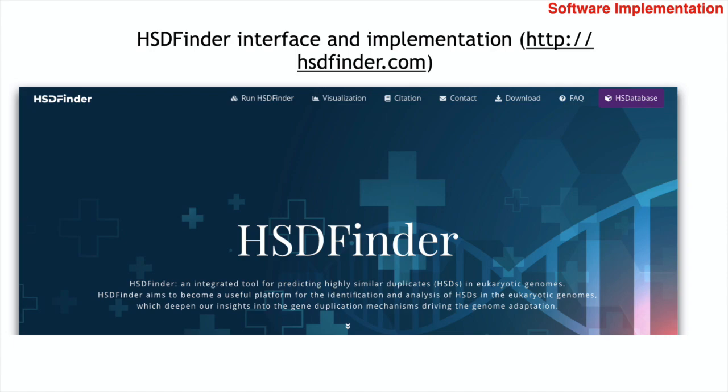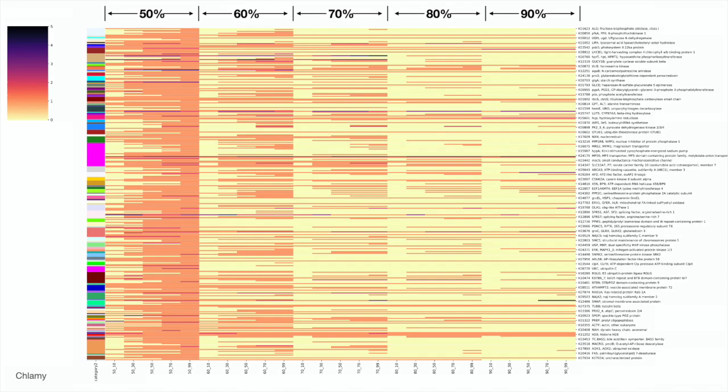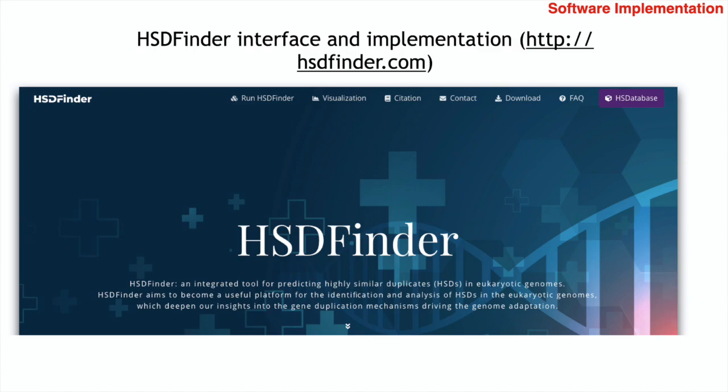Since there was no current tool available, we designed an easy-to-use online software tool called HSDFinder ourselves. This is one of the graphs that can be generated by HSDFinder — a heatmap built based on KEGG functional categories. The matrix infers the number of duplicates; the darker the color, the more duplicates corresponding to that function. This is the interface of this tool, which can be run either on the web or locally.